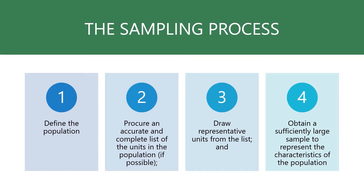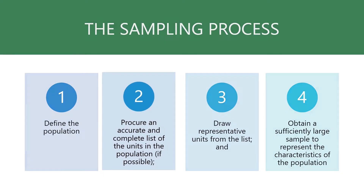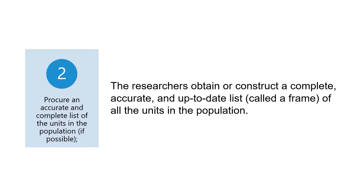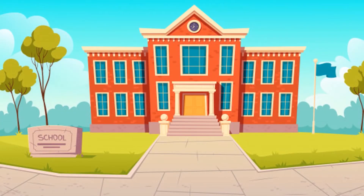The next step is to obtain a list of the population. Once the population is clearly identified, researchers obtain or construct a complete, accurate, and up-to-date list, called a frame, of all the units in the population. This task may consume considerable time and obstacles may arise. For example, schools may have student records available but may be unwilling to reveal or give the list of students enrolled to their institution.